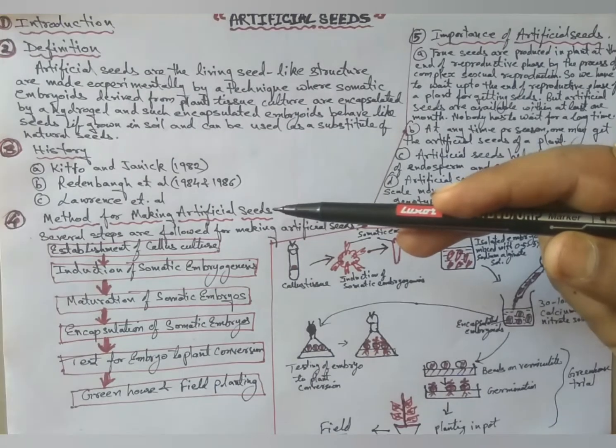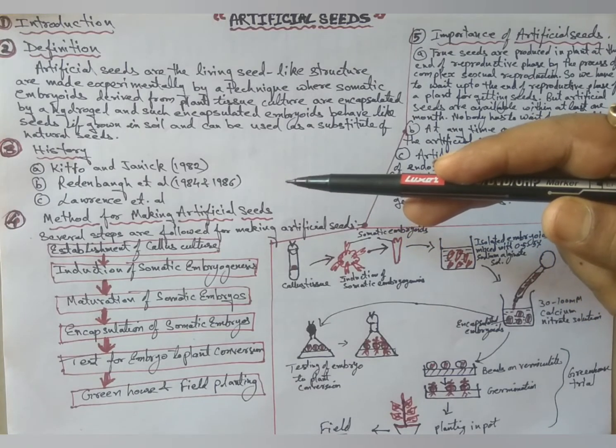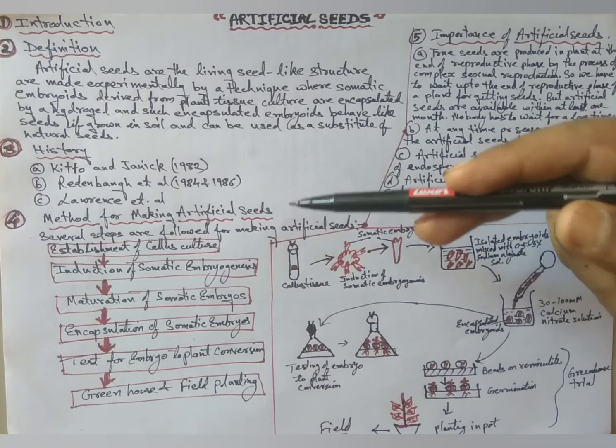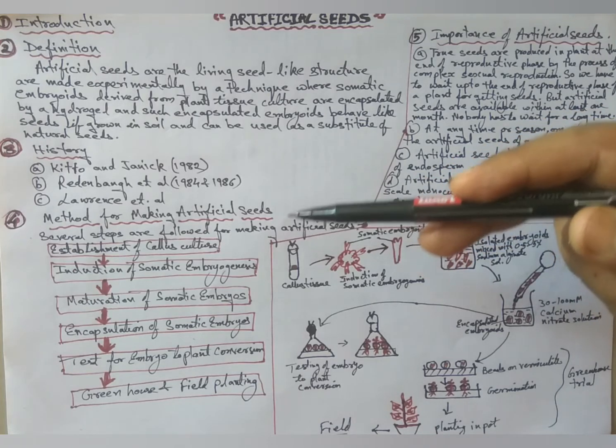Next, Reddenbank et al. 1984 and 1986 discovered that hydrogels such as sodium alginate could be used to produce single embryo artificial seeds.